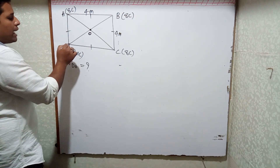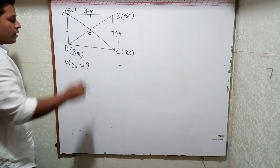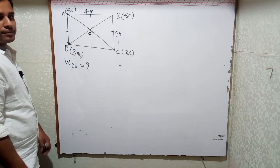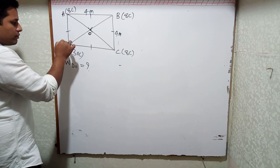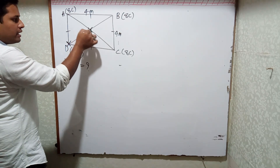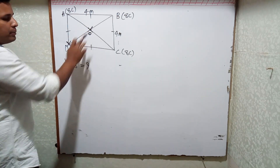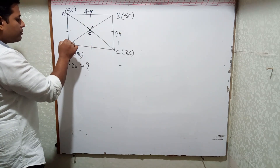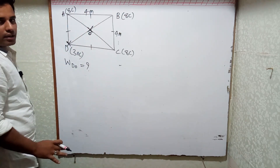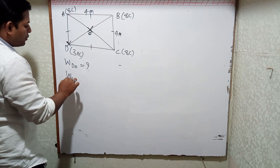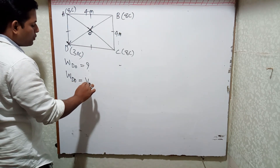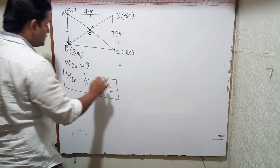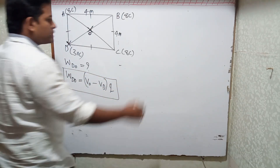Why do I have to do work to move the charge from D to O? Because there is a potential difference between these two points. The potential at D is V_D and the potential at O is V_O, and V_O is greater than V_D. That's why work must be done. The formula is: W = (V_O − V_D) × q.